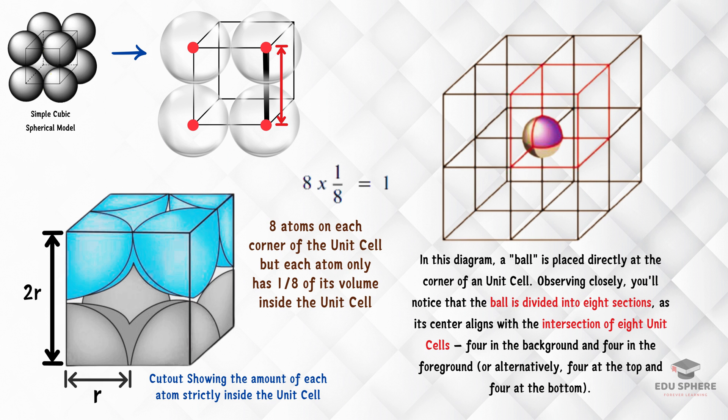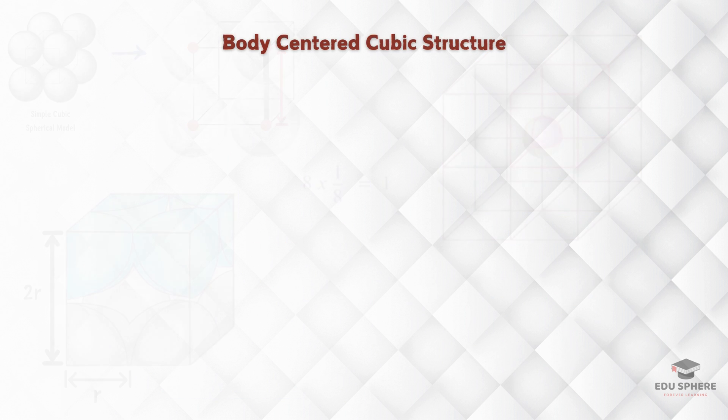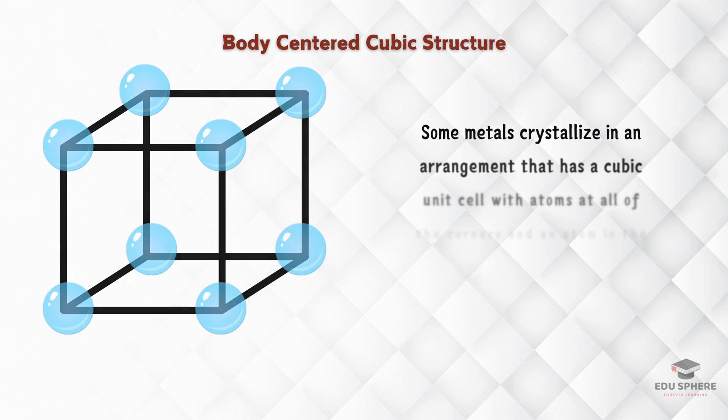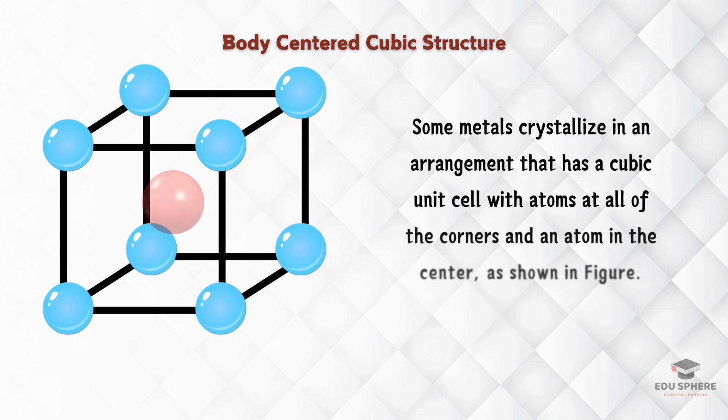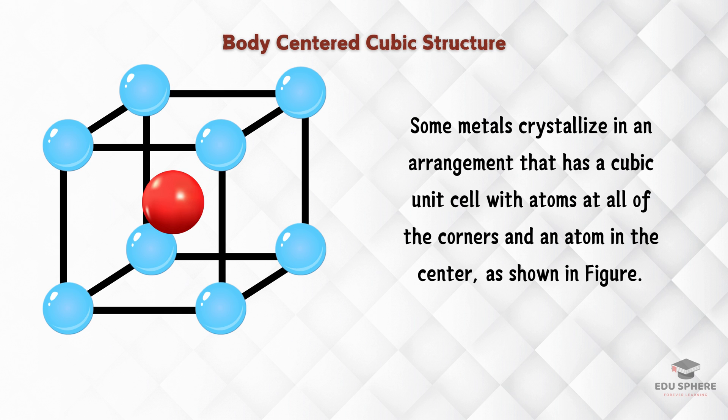Now, let's move on from the simple cubic structure to something a bit more crowded, the body-centered cubic or BCC structure. Imagine taking that simple cubic unit cell and placing another sphere right in the center. That's the key difference in BCC. See how there's an atom in the center of the cube, along with atoms at each corner.